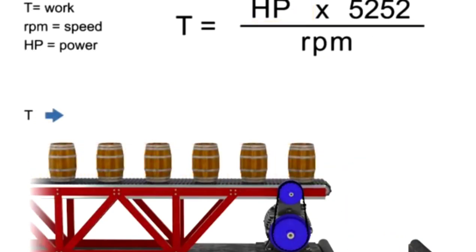Let's say we wish to keep torque constant but want to increase the production of barrels. If the torque or number of barrels on the conveyor belt remains constant but speed increases, then the horsepower of the motor also increases.